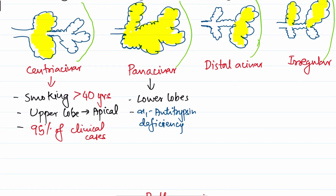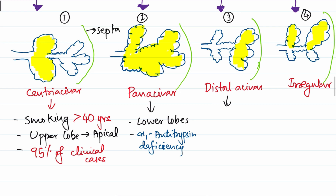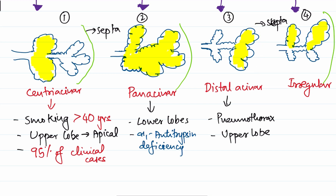Distal acinar emphysema involves dilatation close to the alveolar septa. The emphysematous alveoli can rupture, creating a high risk for pneumothorax. It is more common in the upper lung and occurs due to forces acting on the septa, such as in conditions like fibrosis and atelectasis.